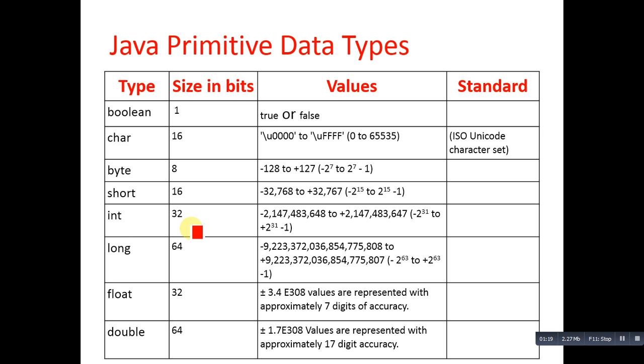Then long, it occupies 64 bits, and its range is also available. So byte, short, int, and long—all these data types will create variables which can store numerical values of integer type.